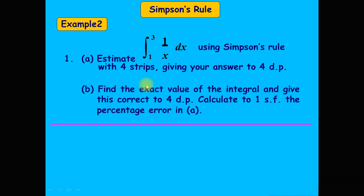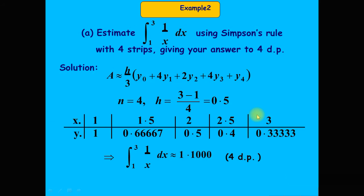In part b, find the exact value and compare the approximate result with the exact result to calculate the error and percentage error to one significant figure. For part a, since we use Simpson's rule with four steps, n = 4 and h = (b − a)/4 = (3 − 1)/4 = 0.5.